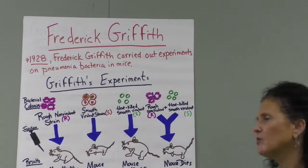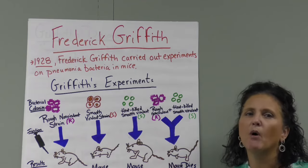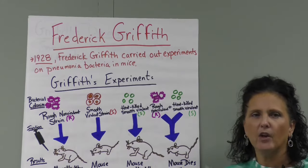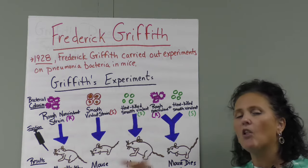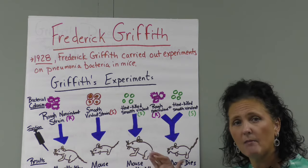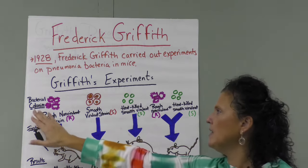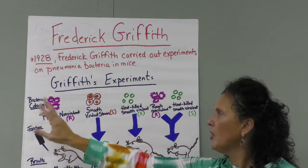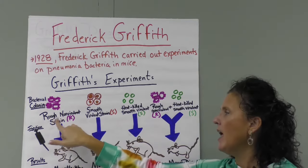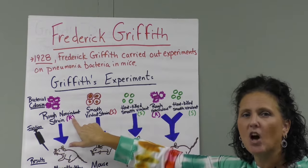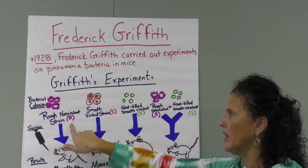The first researcher we have is Frederick Griffith, who has a famous experiment. In 1928, he carried out experiments on the bacteria that cause pneumonia in mice — and even in people — but he did the experiments with mice. He had bacterial colonies that cause pneumonia, and there were two types: the rough colony, which was non-virulent — meaning it didn't cause disease — called the R-strain.